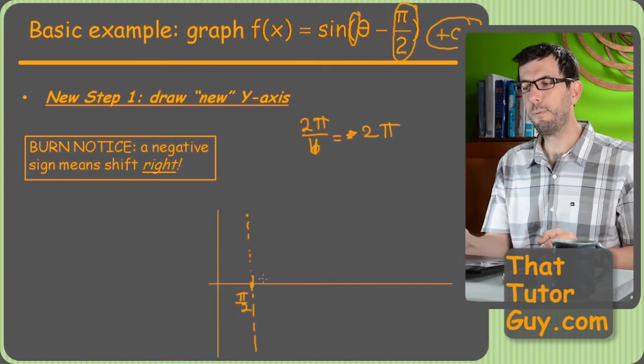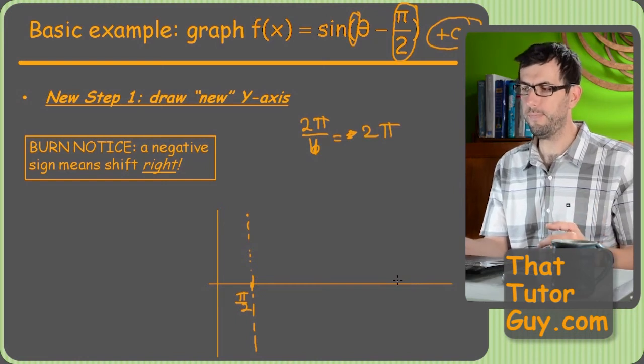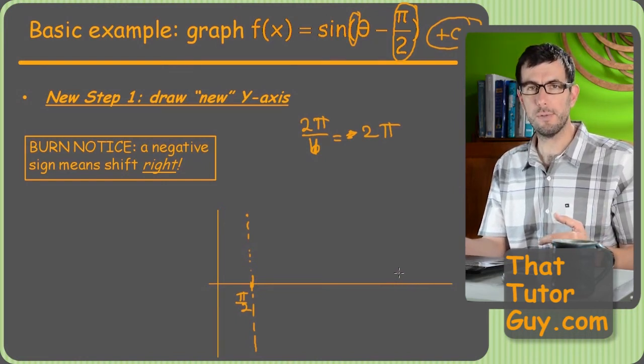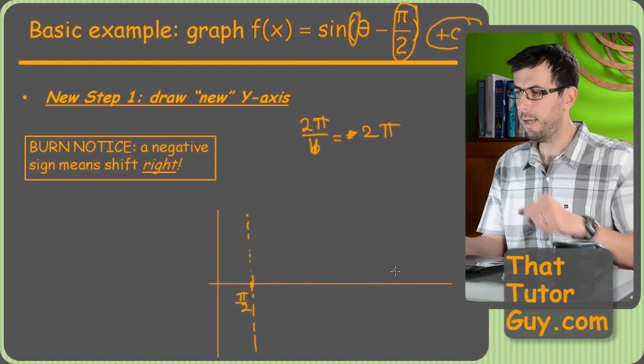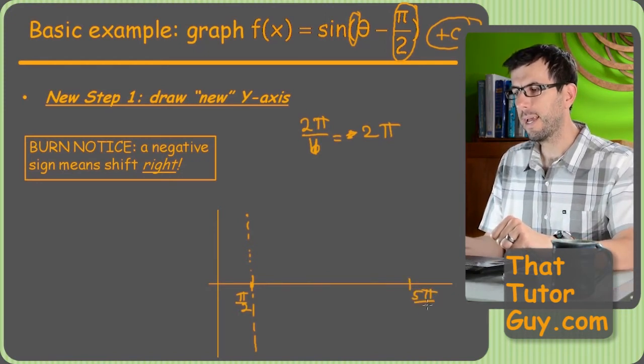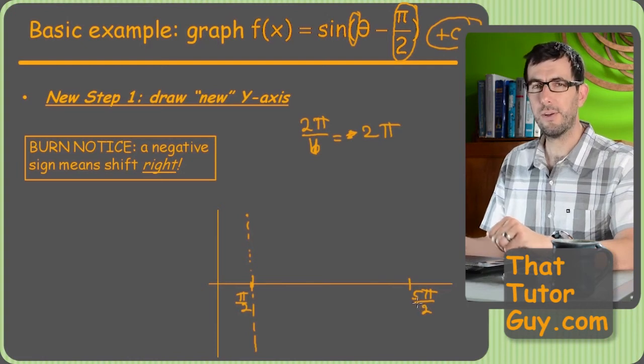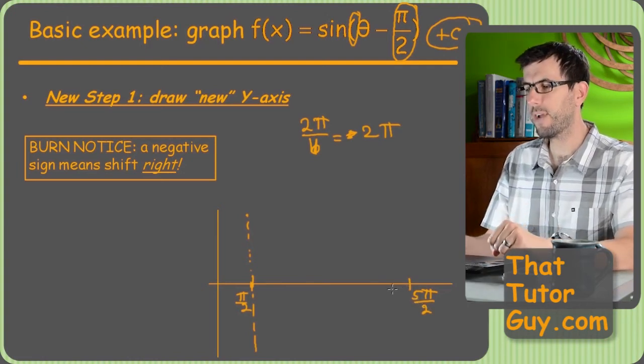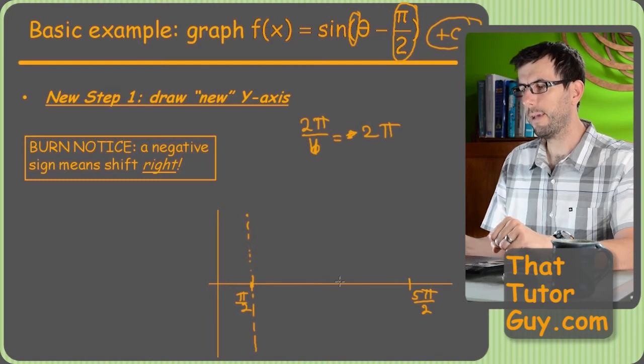So that means my endpoint is not going to be 2 pi. It's going to be 2 pi plus pi over 2. What's 2 pi plus pi over 2, sports fans? Anyone? 5 pi over 2. Not crazy bad, but if you can't do it in your head or even hesitant to, just write it down as a fraction problem, common denominators and all that kind of stuff.